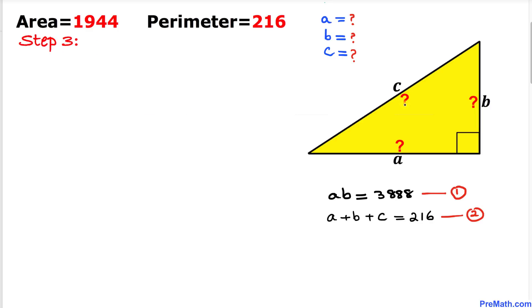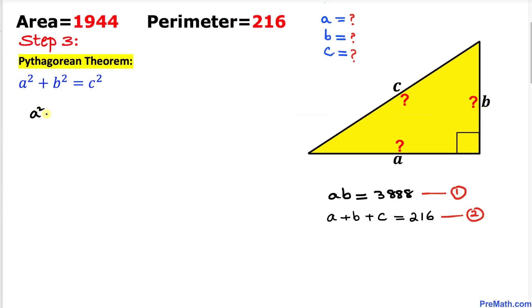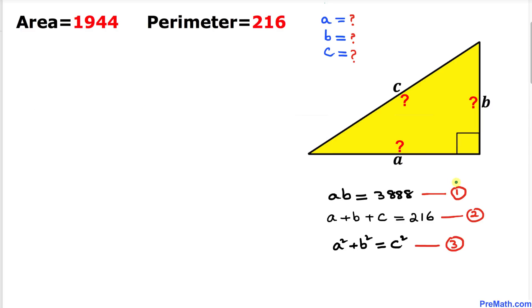Here's our next step. Since we are dealing with a right triangle, let's recall the Pythagorean theorem: a squared plus b squared equals c squared. Let's call this equation number three. Now we have these three equations and we are going to solve for a, b, and c.